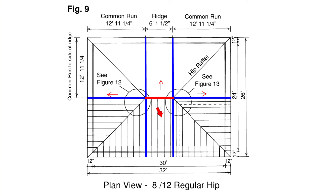When you have the same pitch, the common rafters will always be the same length. The principal common rafters are highlighted in blue. As with a gable roof, we deduct half the ridge thickness from the common rafter run — in this case, 12 feet 11 and a quarter inches has had the three-quarters-of-an-inch deducted. The runs on each side are equal, forming a square, so the hip rafter runs diagonally across that square on a 45-degree angle.